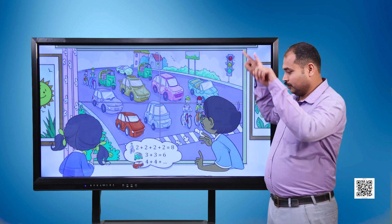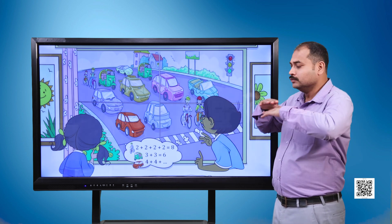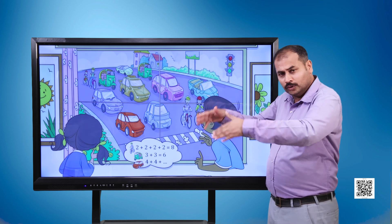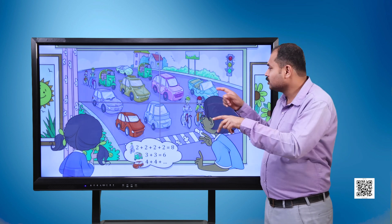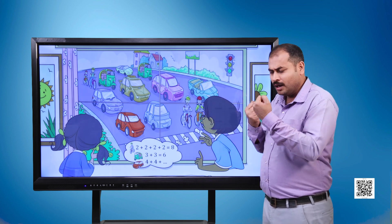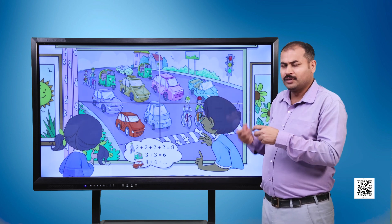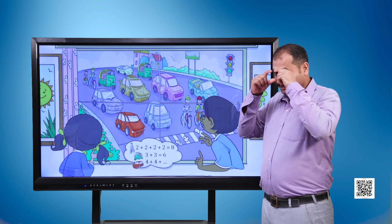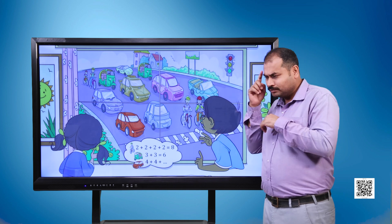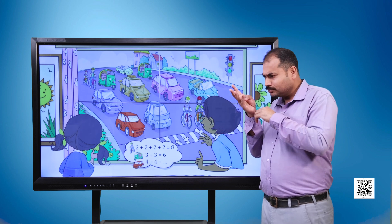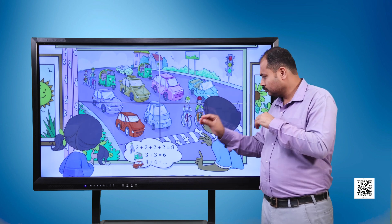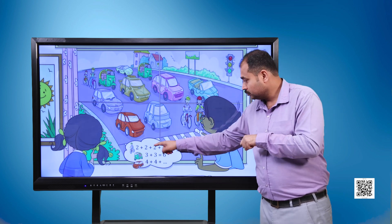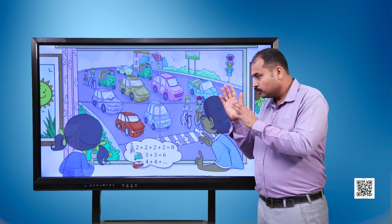They saw four bicycles, so the number of wheels are 2 plus 2 plus 2 plus 2, which is equal to 8. They saw two autos, so the number of wheels are 3 plus 3, which equals 6.